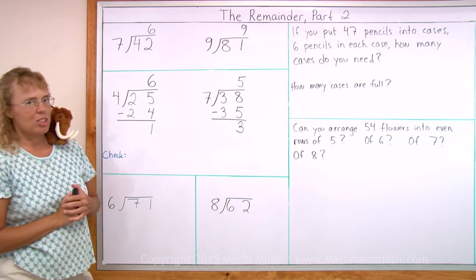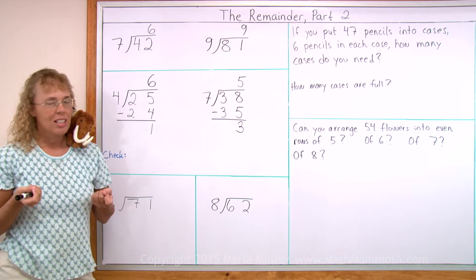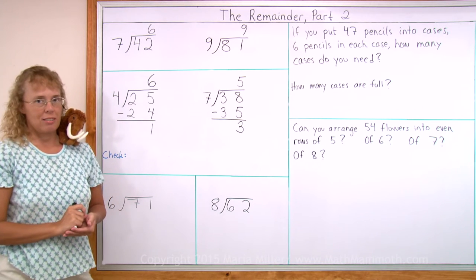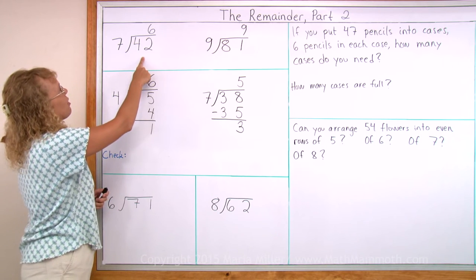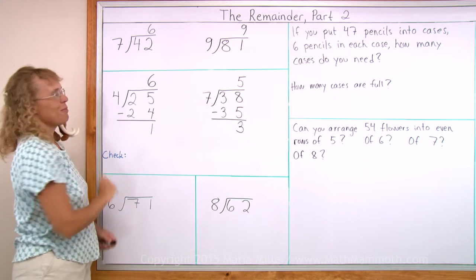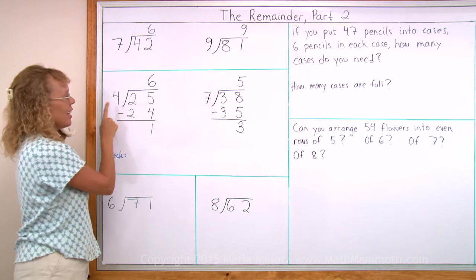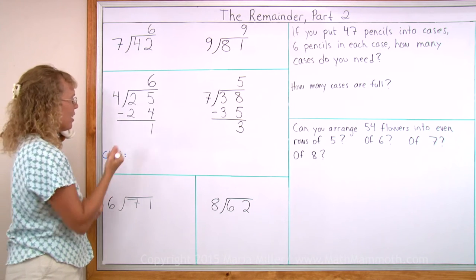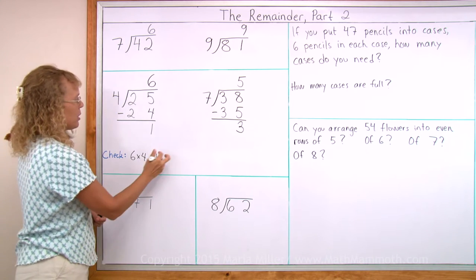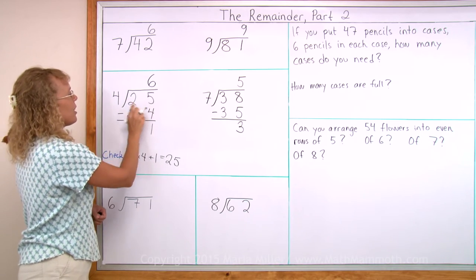Let's also check these two divisions. How do we check a division with a remainder? Now if it didn't have any remainder, you would multiply to check it, right? For example, my first problem here. To check it, I would go 6 times 7 equals 42. But now with this one, I go 6 times 4, and then I add the remainder. The check is 6 times 4 plus 1. So 24 plus 1 equals 25, and that is my original number that I am dividing.